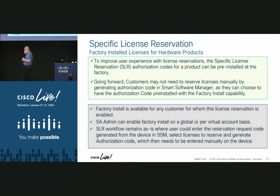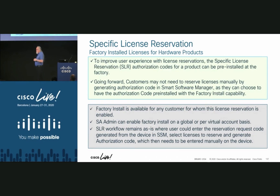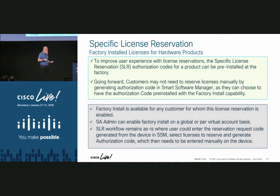If you decide that license reservation isn't really working for you, you can configure the box and the minute you register it, it sends the code up to Cisco, wipes out the permanent reservation, and turns it back into a normal license. It's a lot easier to undo than it is to do. But this is another available option for customers where license reservation is the only game in town.